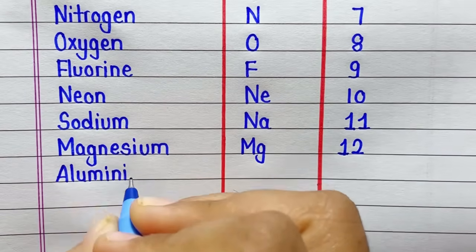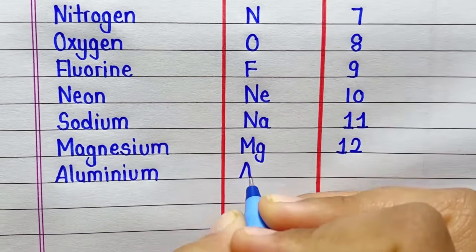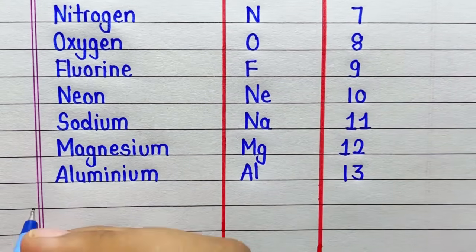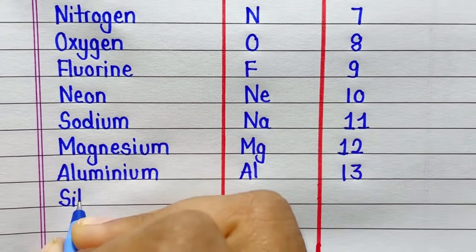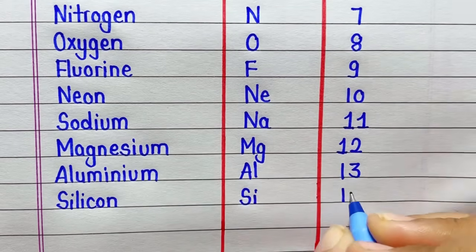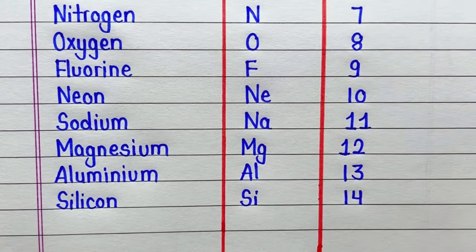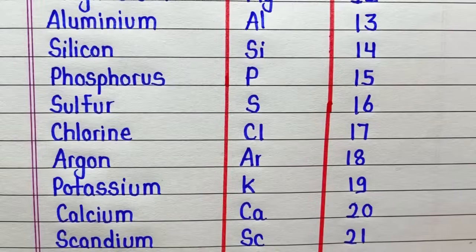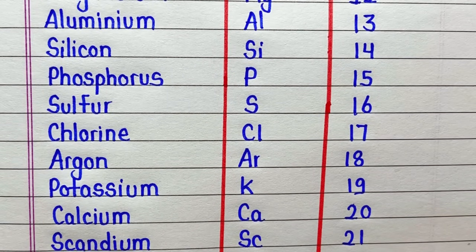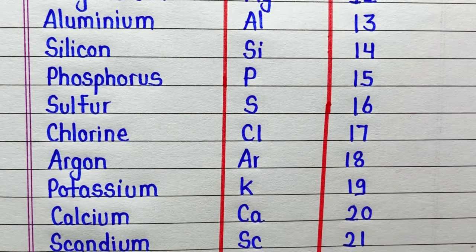Aluminium, symbol is Al, atomic number is 13. Silicon, symbol is Si, atomic number is 14. Phosphorus, symbol is P, atomic number is 15. Sulfur, symbol is S, atomic number is 16.